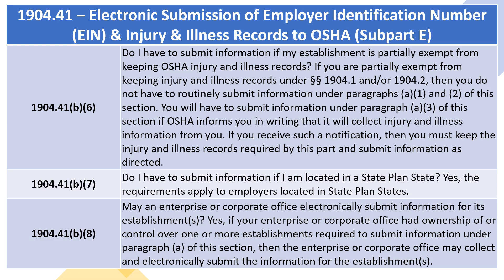1904.41(b)(6): Do I have to submit information if my establishment is partially exempt from keeping OSHA injury and illness records? If you are partially exempt from keeping injury and illness records under Sections 1904.1 and/or 1904.2, then you do not have to routinely submit information under Paragraphs A.1 and A.2 of this section. You will have to submit information under Paragraph A.3 if OSHA informs you in writing that it will collect injury and illness information from you. If you receive such a notification, you must keep the injury and illness records required by this part and submit information as directed.